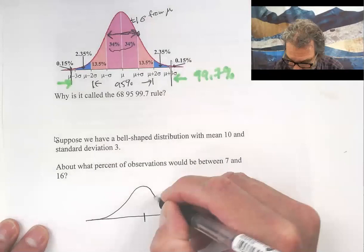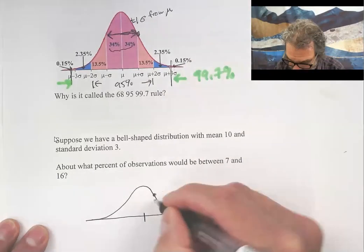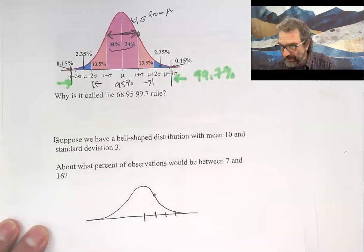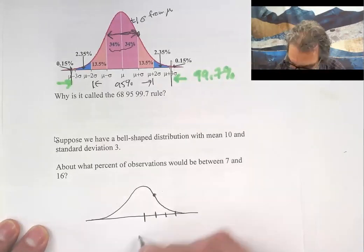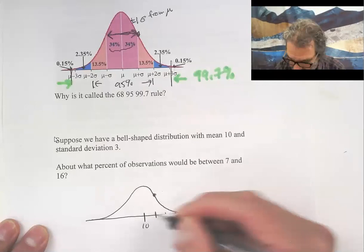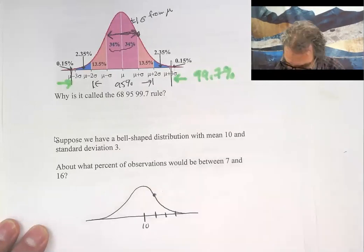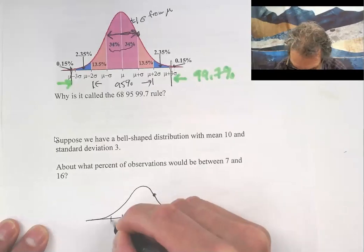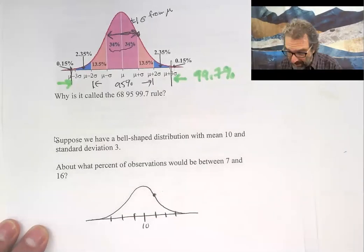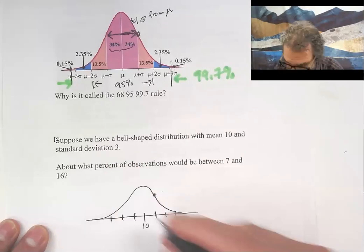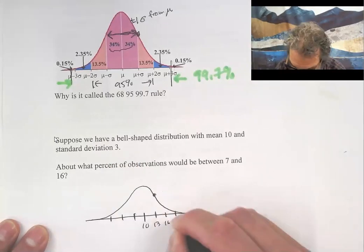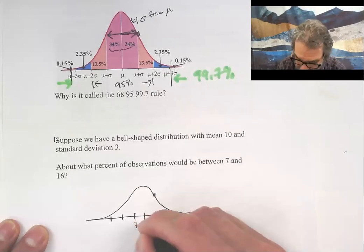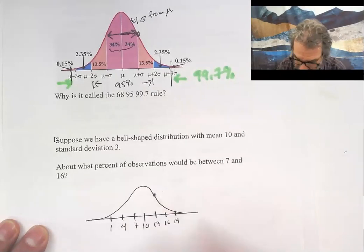We mark it off as standard deviations by using that same distance. μ is here, μ was 10. Since the standard deviation is 3, then that's 13, 16, and 19 adding threes, and that's 7, 4, and 1 subtracting threes.